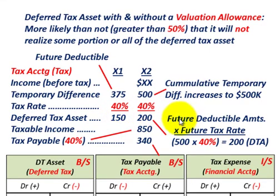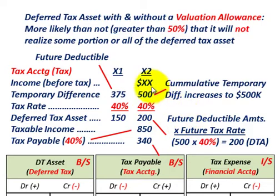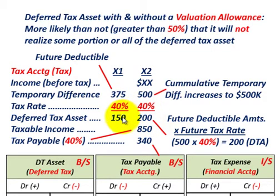A deferred tax asset is where you take your future deductible amounts times your future tax rate. So for year X1, temporary difference is $375,000, tax rate is 40%, giving us a deferred tax asset of $150,000. Moving up to year X2, our temporary difference actually increases from $375,000 to $500,000. Our deferred tax asset for year X2 is simply $500,000 times the 40% tax rate, giving us a deferred tax asset of $200,000. So we have increased our deferred tax asset from $150,000 in X1 up to $200,000 in year X2.